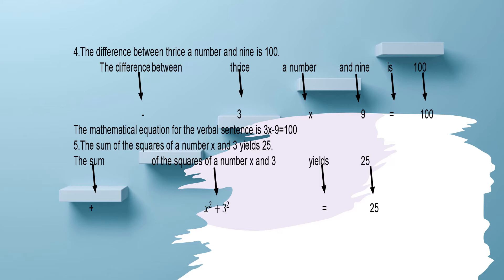Example number five: The sum of the squares of a number x and 3 yields 25. 'Sum' means addition; 'the square of a number x' means x raised to 2; 'and 3' gives 3 raised to 2; 'yields' means equals; and 25. Therefore, the mathematical equation is x squared plus 3 squared equals 25.